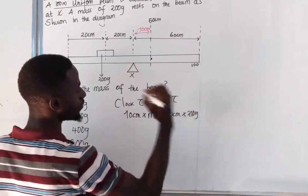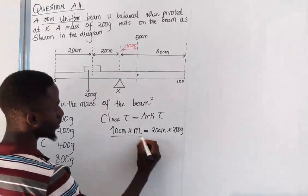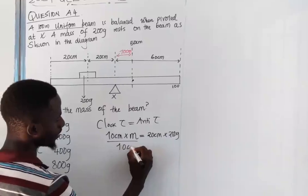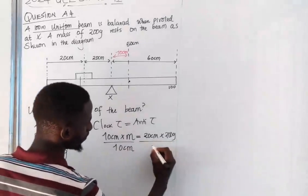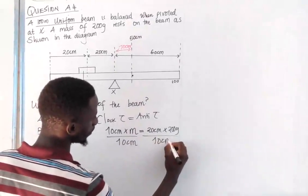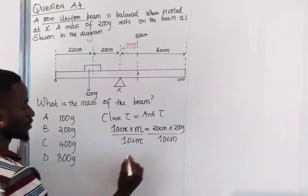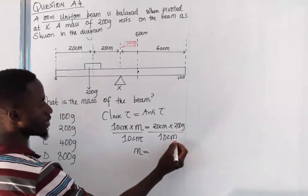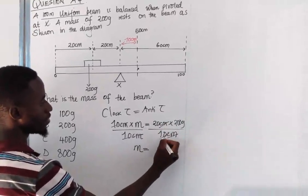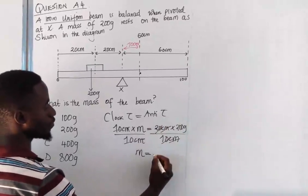We're looking for M, so we divide by 10 centimeters. So centimeters disappear. We have M equal to... centimeter and centimeter gone, zero and zero gone, 2 and 2 is 4, then zero and zero, then you add grams.